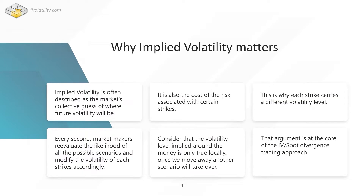Implied volatility is often described as the market's collective guess of where future volatility will be, but it's also the cost of the risk associated with certain strikes — that's why each strike carries a different volatility level. Every second, market makers who specialize in options will reevaluate the likelihood of all possible scenarios and modify the volatility of each scenario accordingly. It's a constant process where every second, market makers change the price slightly — a few cents, a few tenths of a cent — every few seconds depending on what the market does.